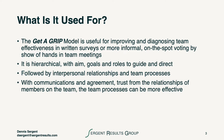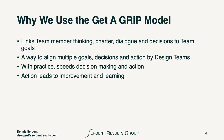We found that with communications and agreement on these critical areas that are part of the Get-A-Grip model, the relationships of team members and team processes can be much more effective. A very valid question is why do we use the Get-A-Grip model, and it's because it helps us link team member thinking as individuals to the charter, the dialogue, the decisions, as well as team goals. It's a way for us to align multiple goals, decisions, and actions by the teams, and with practice we can speed the decision-making and action, and action with knowledge leads to improvement and learning.